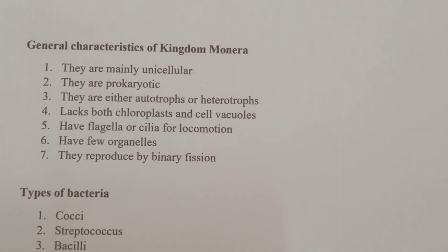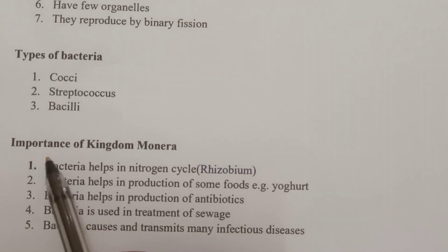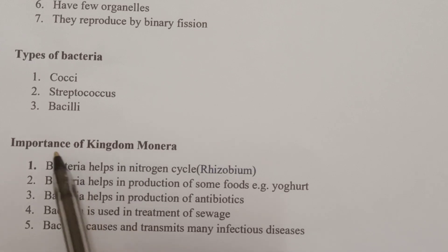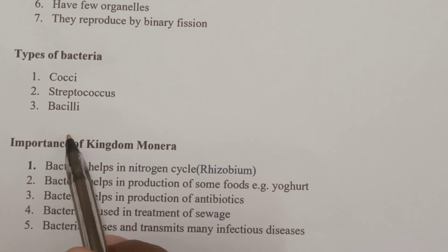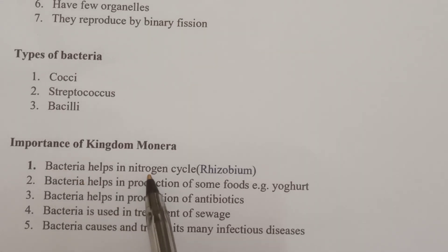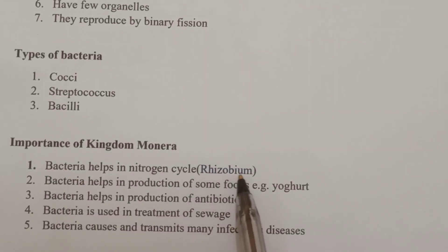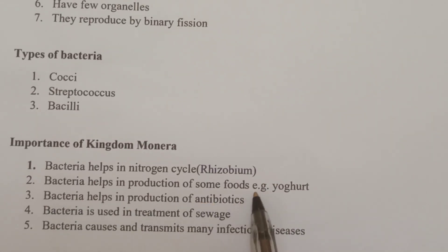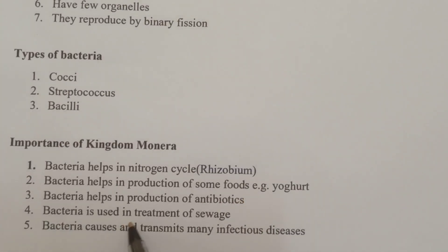Economic importance of kingdom Monera — we need to know both positive and negative importance. Number one, bacteria helps in the nitrogen cycle; a good example is the Rhizobium bacteria. Number two, bacteria helps in production of some foods, e.g. yogurt, cheese, and so on. Number three, bacteria helps in production of antibiotics, which are used to fight against pathogens. Number four, bacteria is used in treatment of sewage. On the negative side, bacteria causes and transmits many infectious diseases.